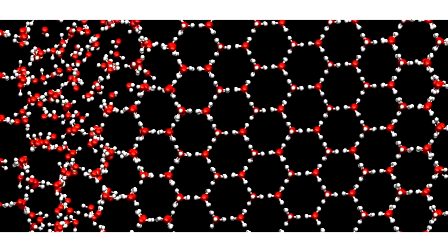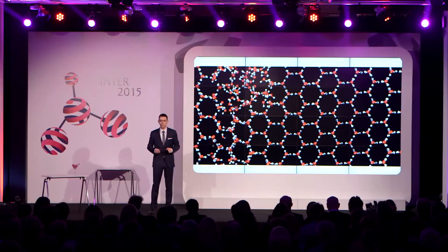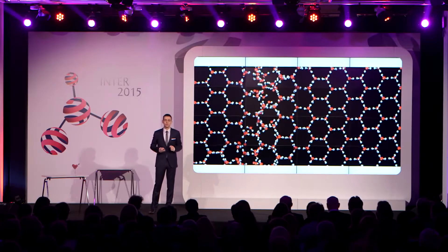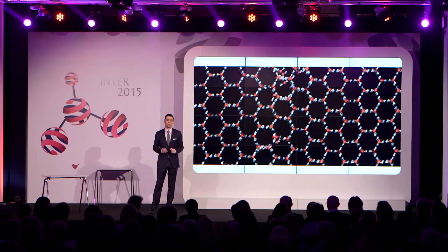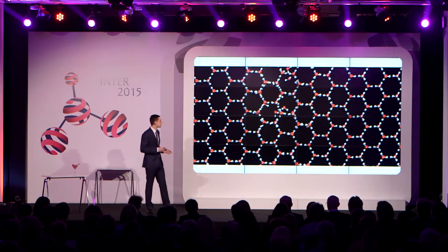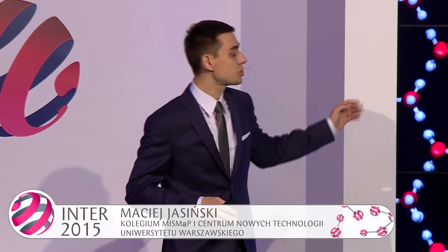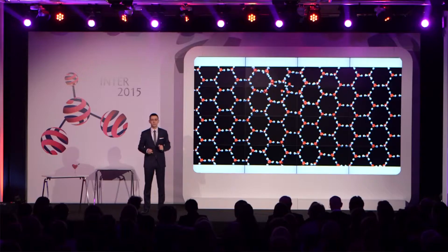W symulacjach możemy w zasadzie dowolnie zmieniać parametry badanych cząsteczek i obserwować, jak wpływa to na ich zachowanie i właściwości. Wykonując więcej takich symulacji z wykorzystaniem różnych modeli cząsteczek wody, będę mógł stwierdzić, która z właściwości cząsteczek odpowiada za występowanie efektu Mpemby. Symulacja, którą widzieliście przed chwilą, to efekt próbnych obliczeń z uproszczonym modelem cząsteczek, w którym długość wiązań była stała, niezależna od temperatury – a jak widać, wszystko doskonale zamarzło.